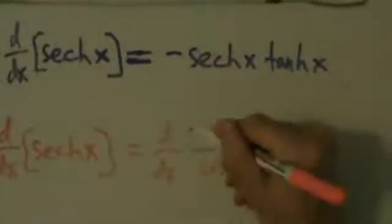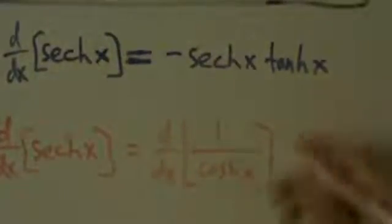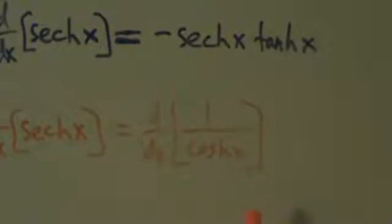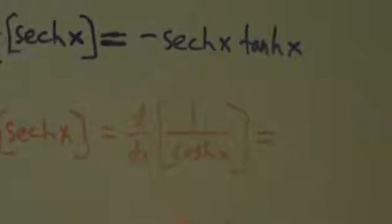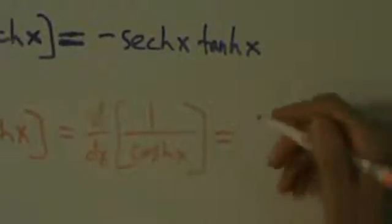We could do it like that, or we could do it like in the last video when we did this to the negative first power and then did the chain rule. Or we could do this in terms of the exponential functions.